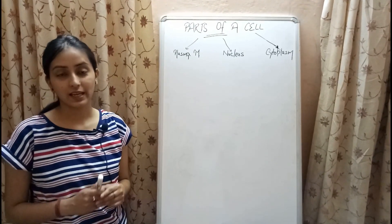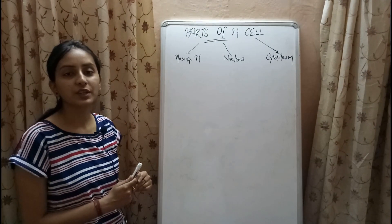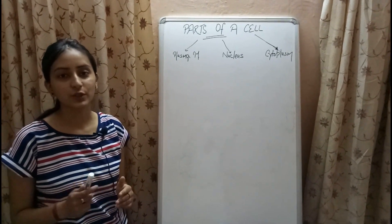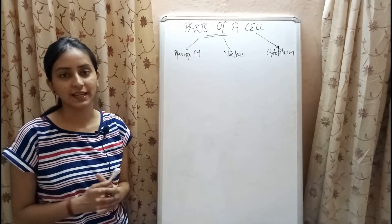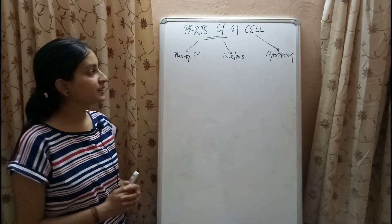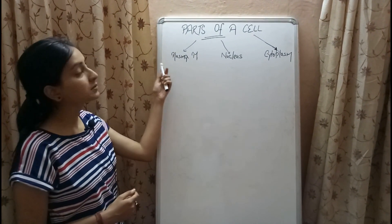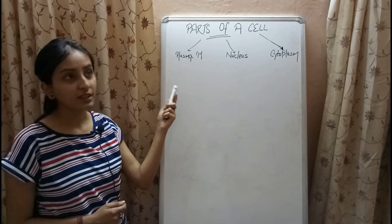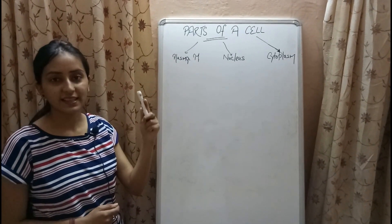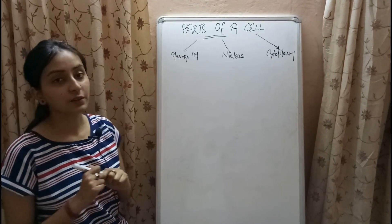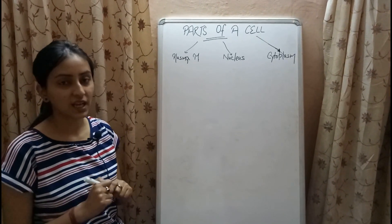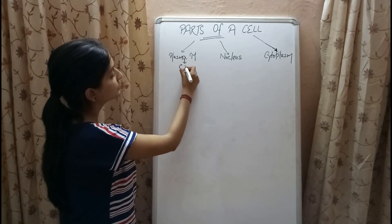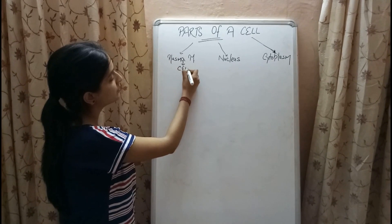Welcome to Biology at Ease. In my previous video I gave a brief introduction about the fundamental units of life, that is the cell. Now in this video I'll be explaining the three major parts of the cell: the plasma membrane, nucleus, and cytoplasm. So let's begin with the first part — plasma membrane. Plasma membrane, also known as cell membrane,